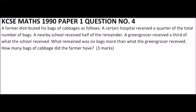In this question, we are told a farmer distributed his bags of cabbages as follows: a certain hospital received a quarter of the total number of bags, a nearby school received a half of the remainder, a green grocer received a third of what the school received, and what remained was six bags more than what the grocer received. How many bags of cabbages did the farmer have? Let the number of bags be X.